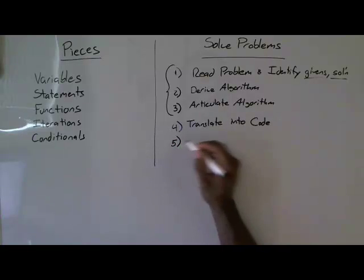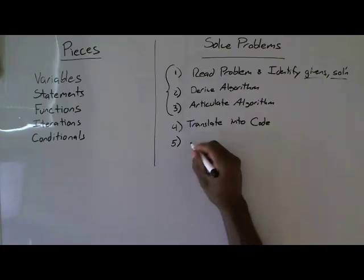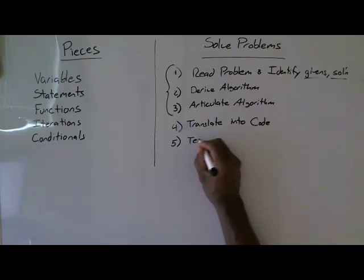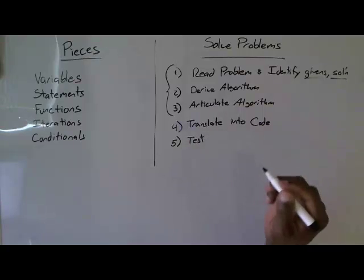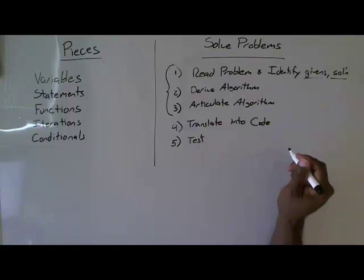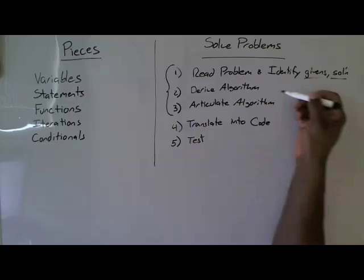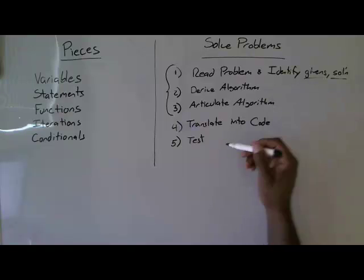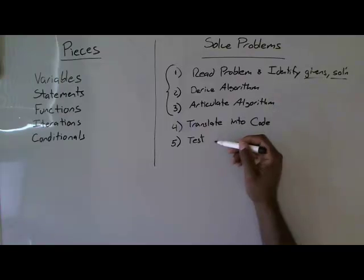Then once you've translated it into code, then you have to test it. You have to test to see if it's right. If you've done your work right, you thought of your test when you derived your algorithm. So you should have thought of your test up here. And then what you do down here in step five, you've sort of already written step five.